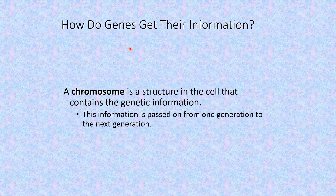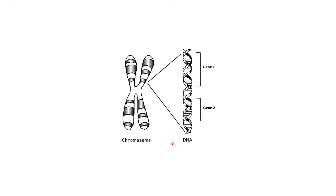How do genes get their information? A chromosome is a structure in the cell that contains genetic information. This information is passed on from one generation to the next. Here is the chromosome — they contain the genes.